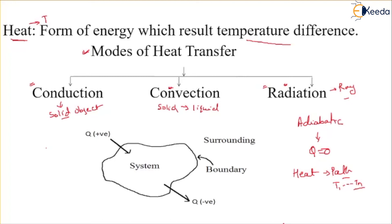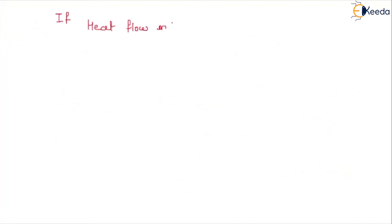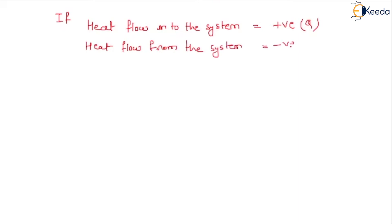The sign convention of heat transfer is defined on the basis of interaction between system and surrounding. If heat flows into the system — from the surrounding to the system — that heat transfer is positive. If heat flows out from the system, that heat transfer is negative.